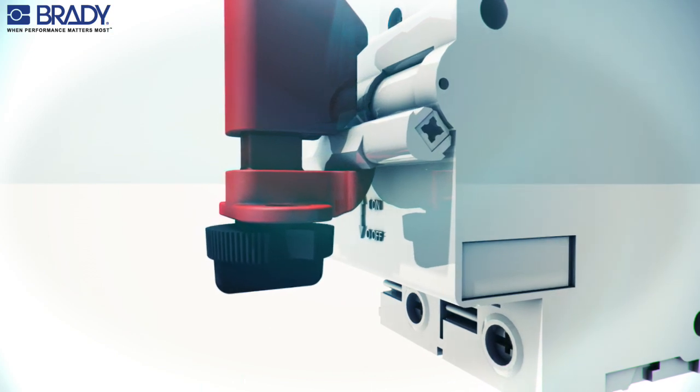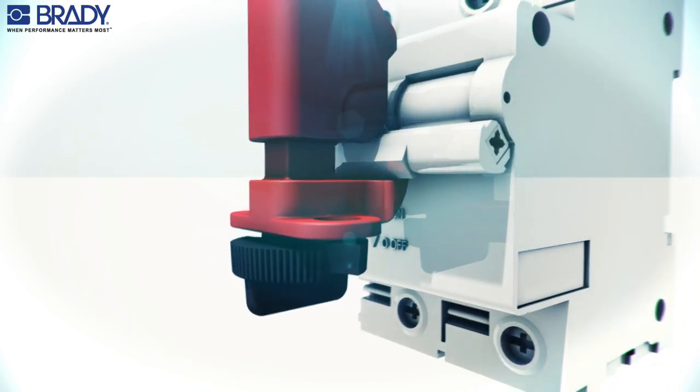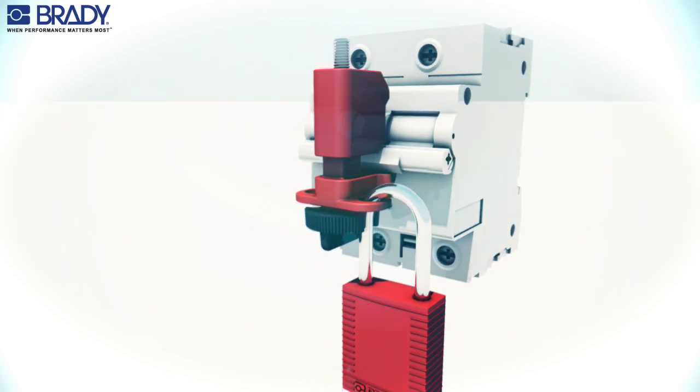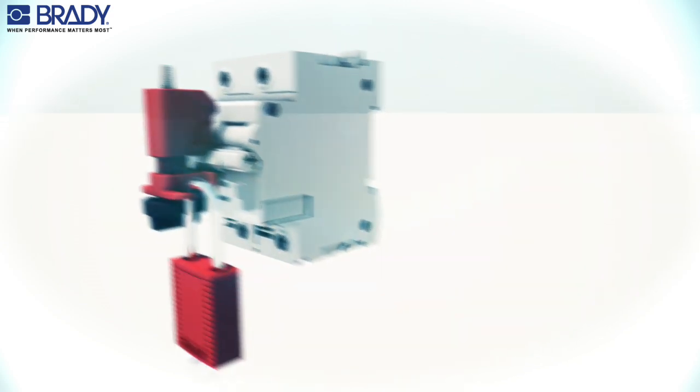Rotate the thumb wheel clockwise to secure the lockout device to the circuit breaker. Insert the padlock through the hole to secure the device in the locked position.